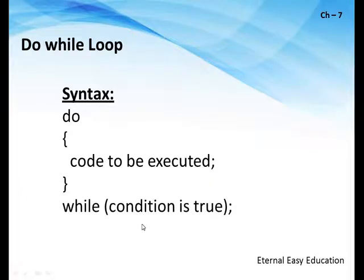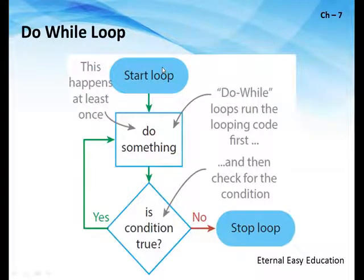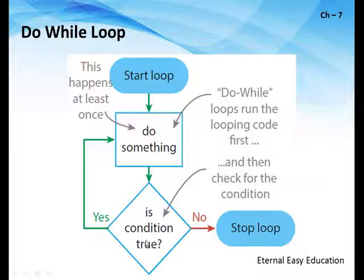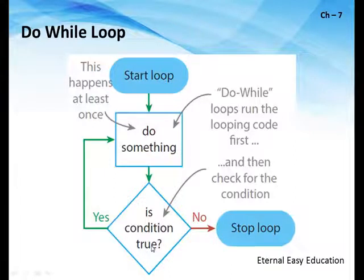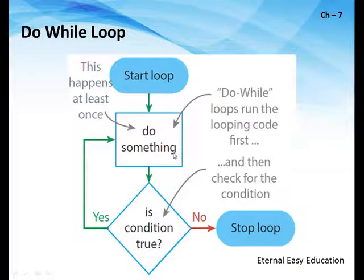We'll see with an example. Look at the flowchart of do-while: do something first, then check the condition. This happens at least once, then it checks the condition. If true, it goes again and executes repeatedly until the condition is false. But if the condition is false at the starting point, since it executes the segment first and checks condition second, the do-while will execute once even though the given condition is false.